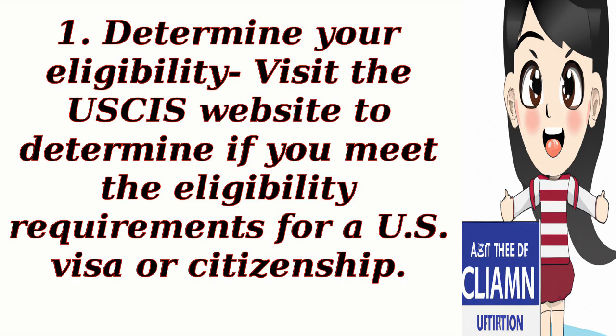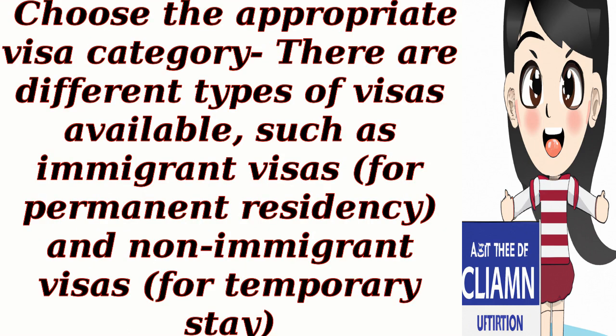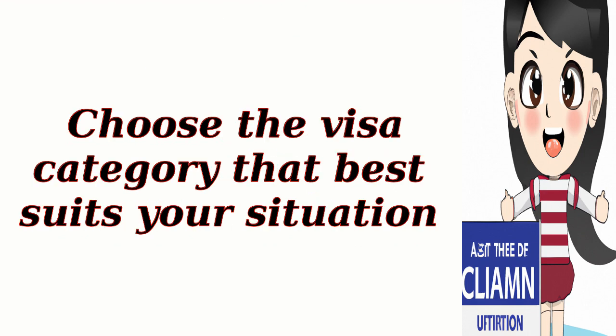1. Determine your eligibility: Visit the USCIS website to determine if you meet the eligibility requirements for a U.S. visa or citizenship. 2. Choose the appropriate visa category: There are different types of visas available, such as immigrant visas for permanent residency and non-immigrant visas for temporary stay. Choose the visa category that best suits your situation.